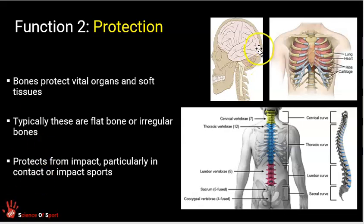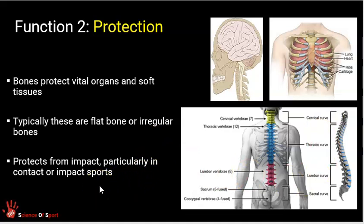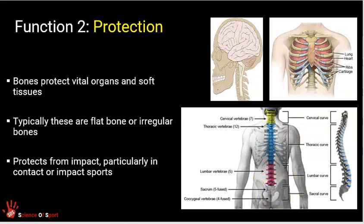The next function is protection. The cranium or skull protects the brain within it. The thoracic cavity — our ribs and sternum — protects the lungs and heart encased within. The vertebral column, with its different vertebrae, protects the spinal cord. Many bone types serve protective roles: vertebrae are irregular bones, cranial bones are flat bones. In sports like rugby, the thoracic cage, cranium, and pelvis are there to protect vital internal organs from impact.